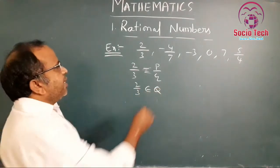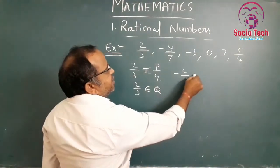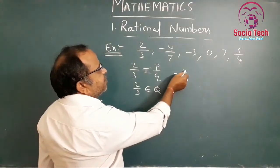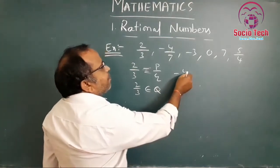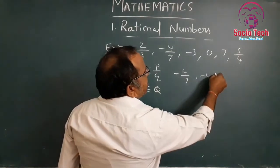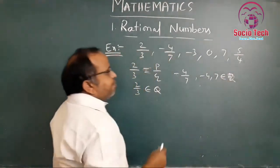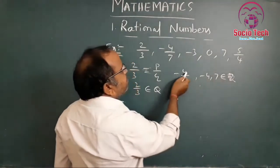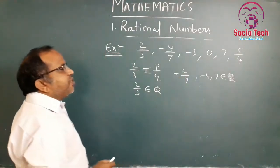Next, -4/7 is also an example of a rational number. Here, -4 is p and 7 is q. Both -4 and 7 belong to the integer set, and the number is in the form of p by q, so -4/7 is also a rational number.